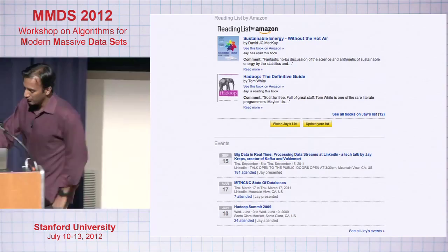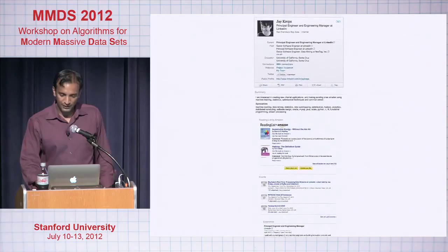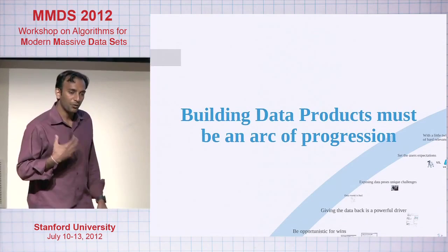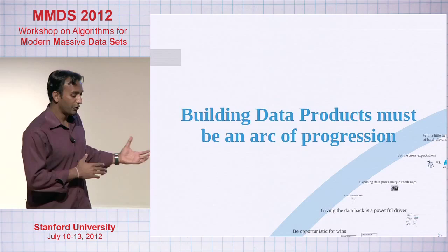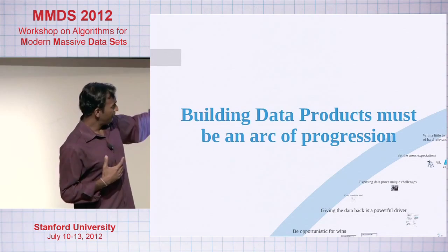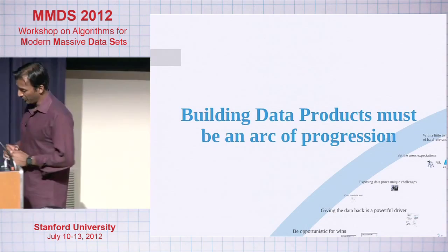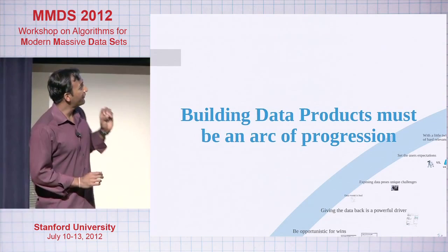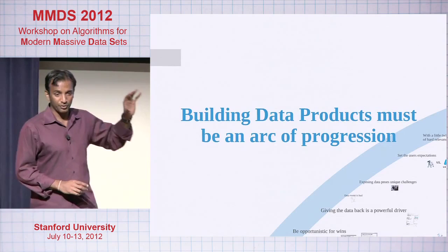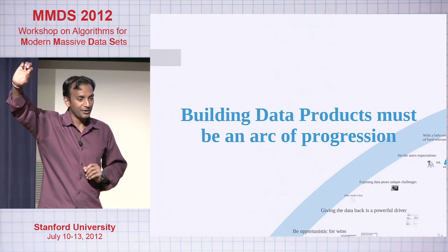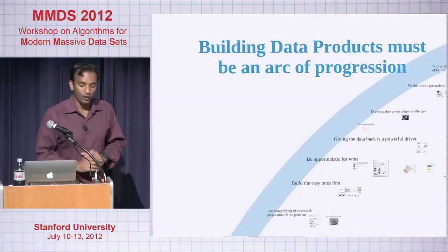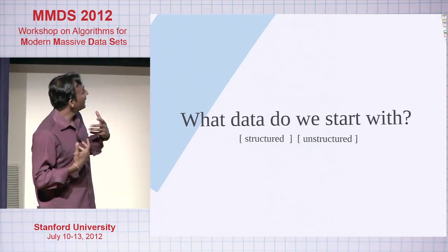Let me walk through some of the lessons I wish I knew that we discovered as a team really going through and building products over the last few years. The key thing to remember is that building your products is an arc — a strategic arc of progression. You're not trying to climb Mount Everest today; you need to do a bunch of training runs first. The first part is always asking: what data do you start with? What's structured? What's unstructured? And of that mixture, what do you want, what can you do, and what are the limitations?